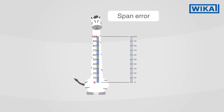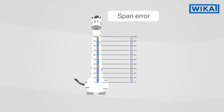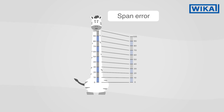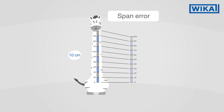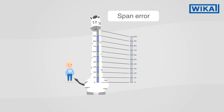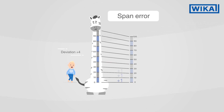The span error occurs between the zero point and the full scale value. It arises when the distance between the individual divisions is constant but constantly wrong. For example, the graduation marks were labeled with 10 centimeters on the rule, however the separation actually corresponds to 11 centimeters. At the beginning of the scale this error is of minor importance, but it adds up and from a certain size it becomes noticeably significant.